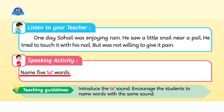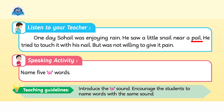Whenever you see the letters A and I written together, you have to pronounce it as AY. AY as in nail, as in pail, as in snail, as in rain, as in pain, and as in pail.